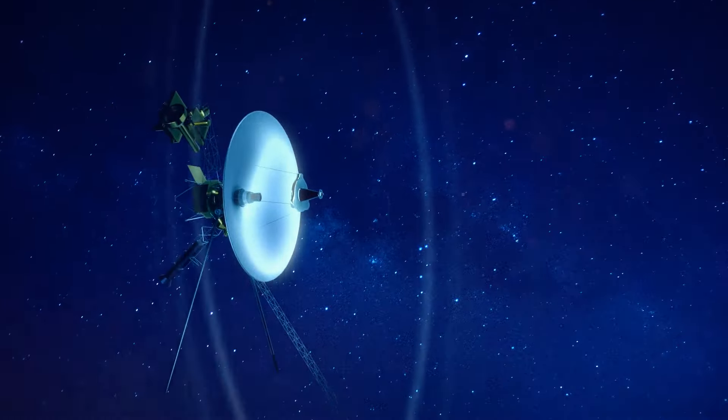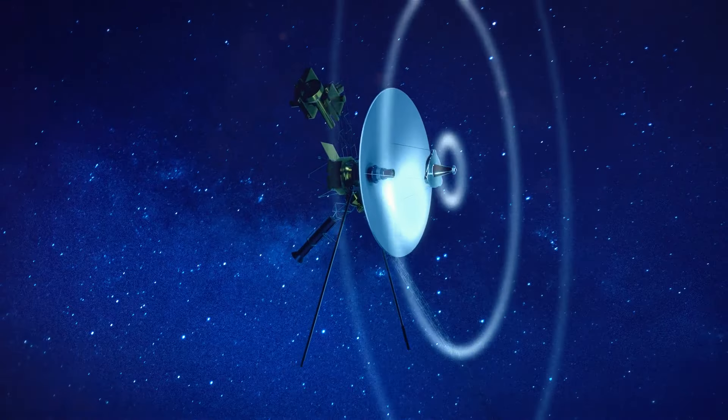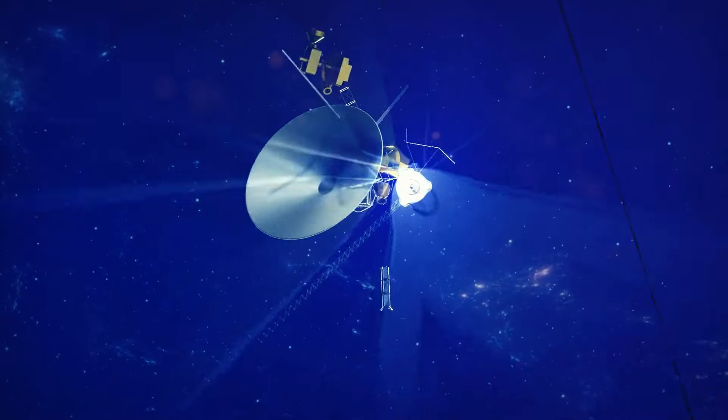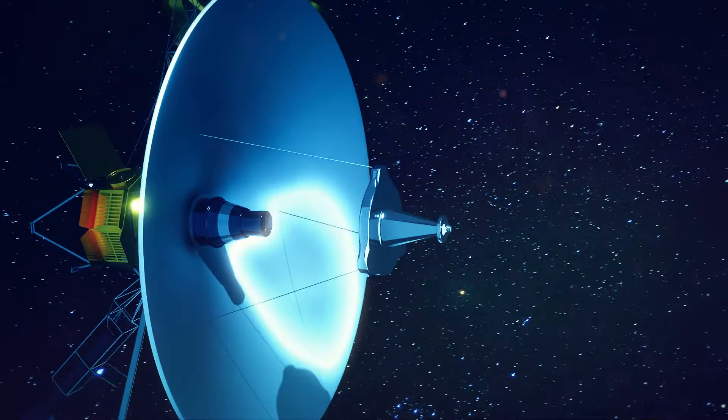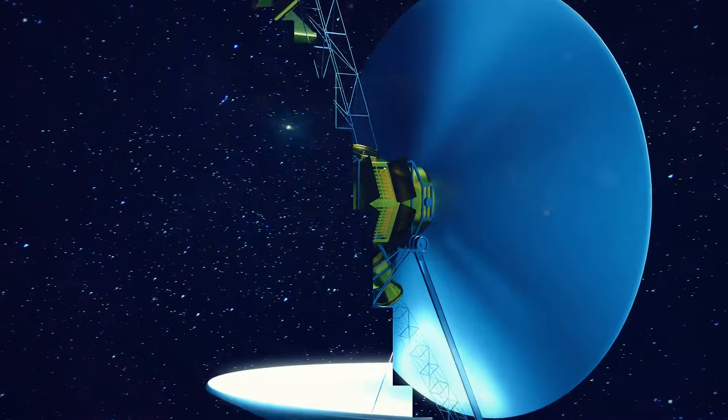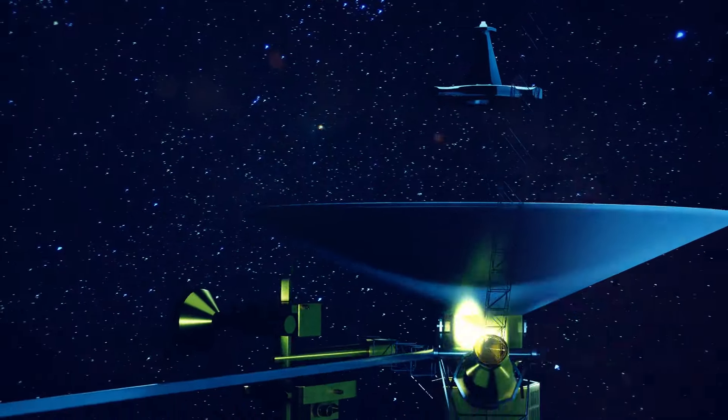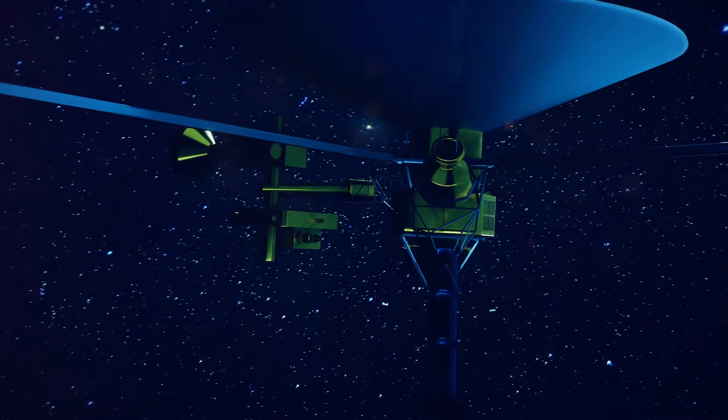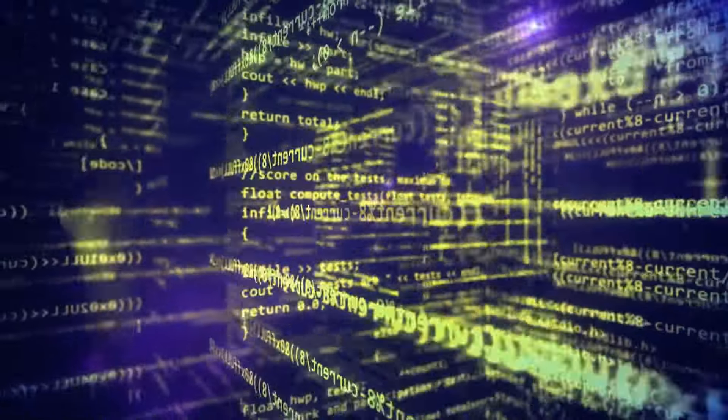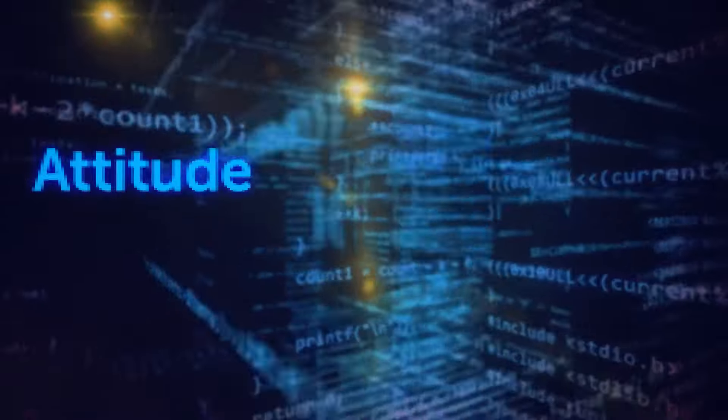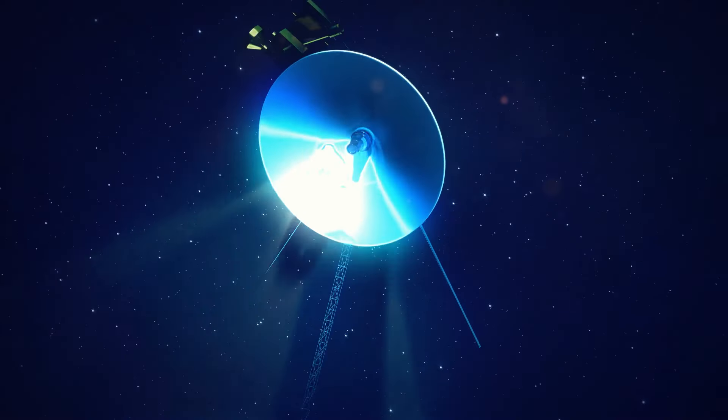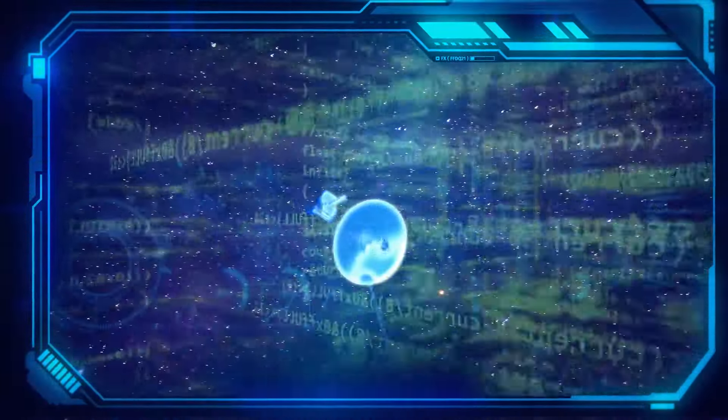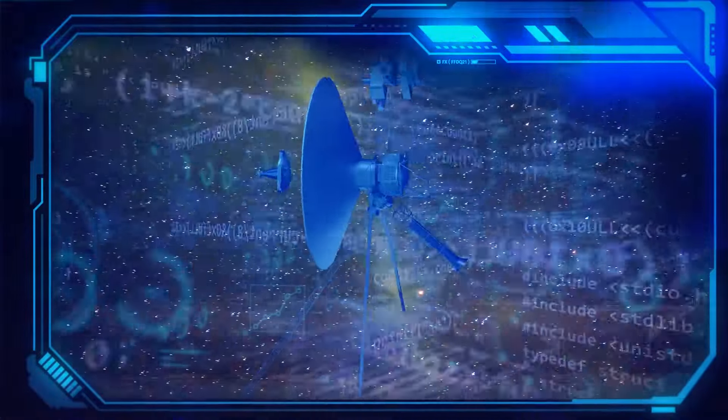Now, I bet you're thinking the thing just probably broke down or something. But the truth is that Voyager 1 is totally fine. It works as usual, receives and carries out commands from Earth, and collects and sends scientific data. But the readings of the AACS, which stands for Attitude and Articulation Control Subsystem, don't show what is actually happening to Voyager anymore. The system supports the orientation of the probe in space and helps it keep in touch with Earth.